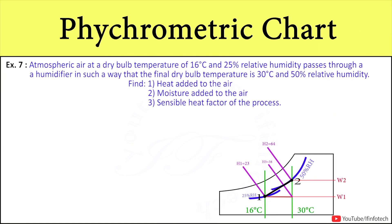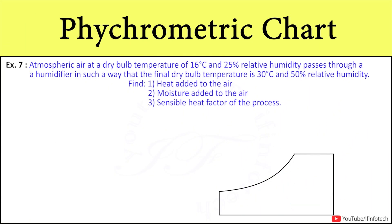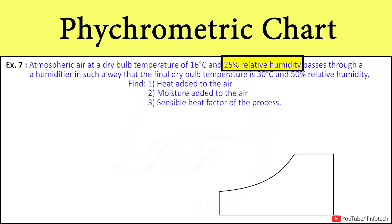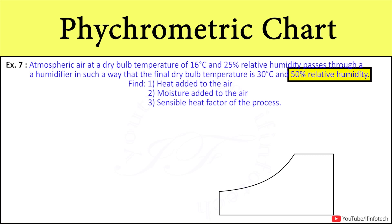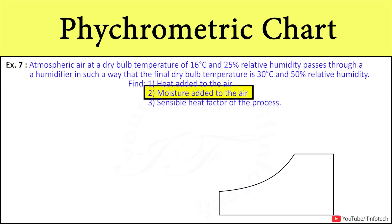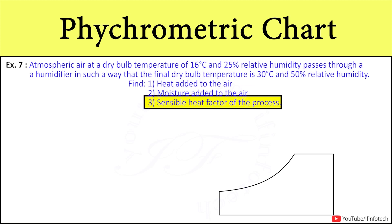For the next numerical, the statement is: atmospheric air at a dry bulb temperature of 16 degree Celsius and 25% relative humidity passes through a humidifier such that the final dry bulb temperature is 30 degree Celsius and 50% relative humidity. Find heat added to the air, moisture added to the air, and the sensible heat factor of the process.